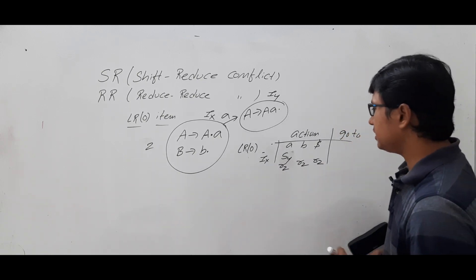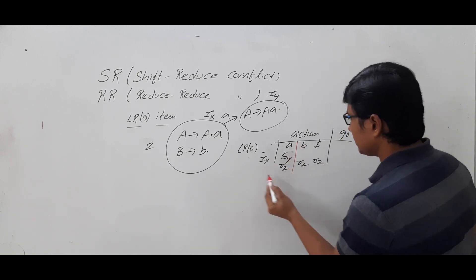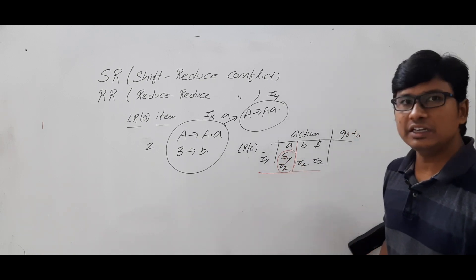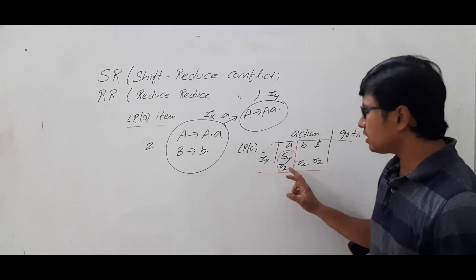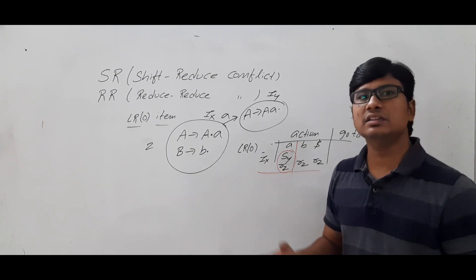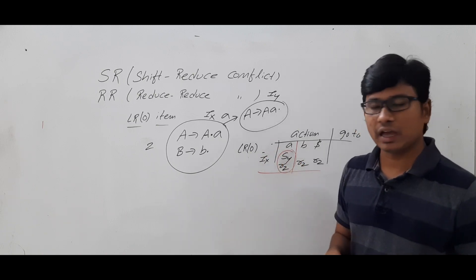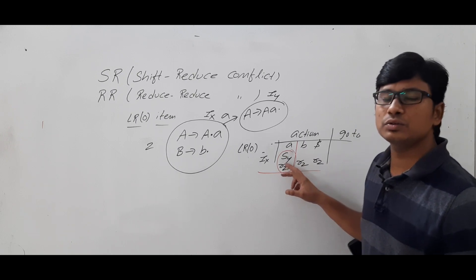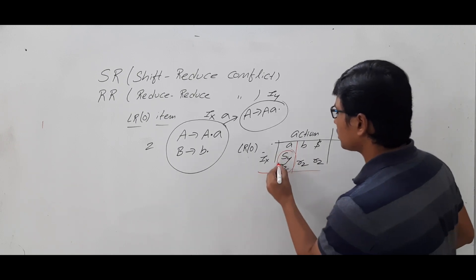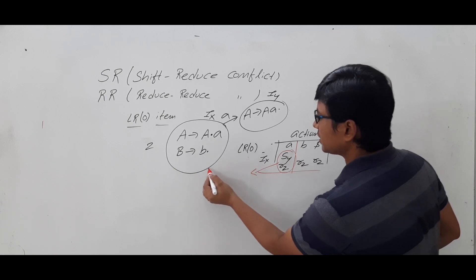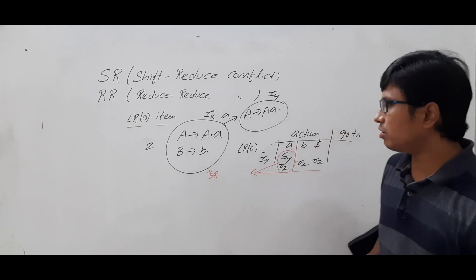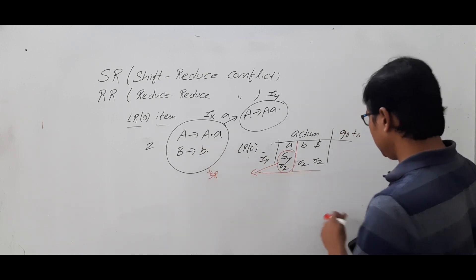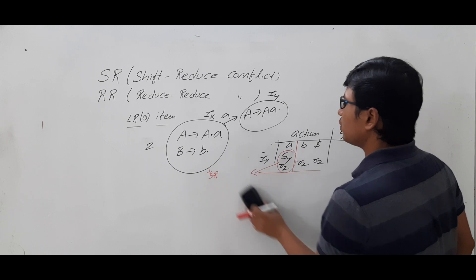Now if you look at the column for terminal 'a', we have two entries: Sy and r2. If any table cell has more than one entry, there is a conflict. Since we have both a shift (S) and a reduce (r2) in the same cell, we call this an SR conflict. This is an example of SR conflict in LR0.